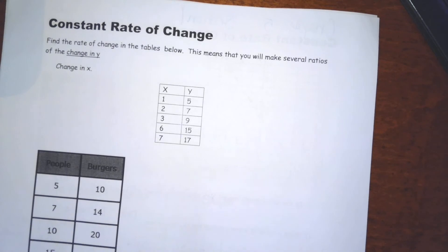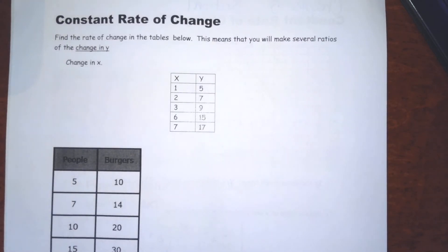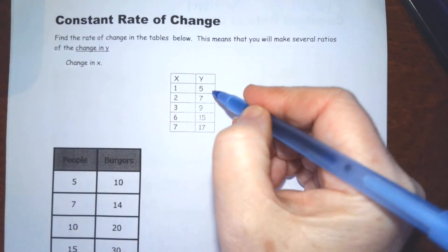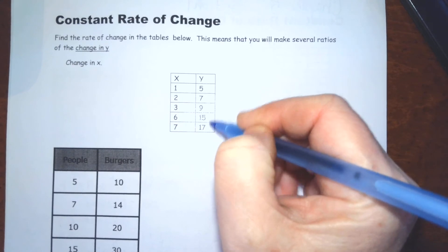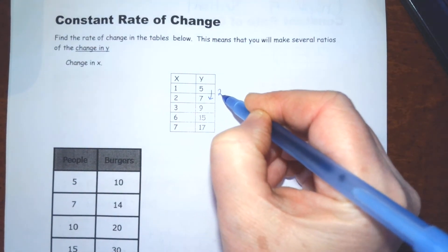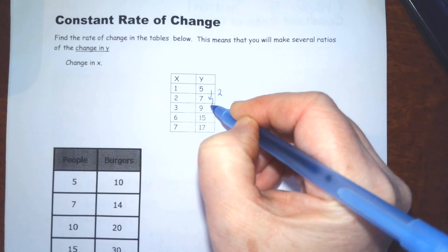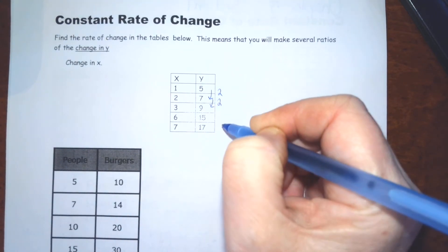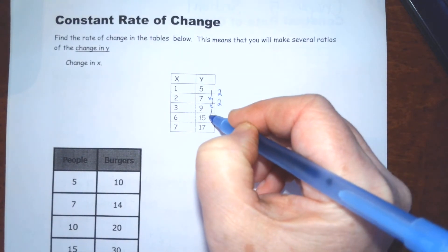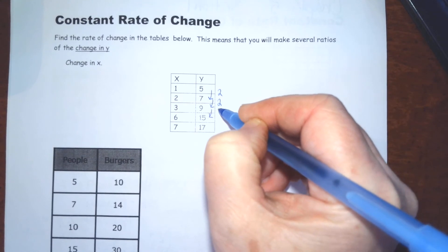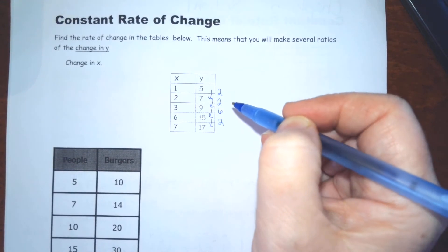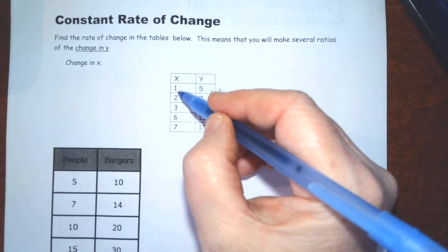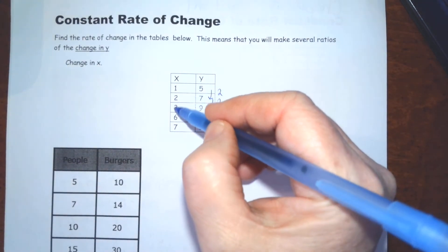Find the rate of change in each table. Determine if it's a constant rate of change. So, let's see what happens here. Let's decide how the values are changing as we move down the table. From 5 to 7, it increases by 2. From 7 to 9, it increases by 2. From 9 to 15, it increases by 6. From 15 to 17, it increases by 2.